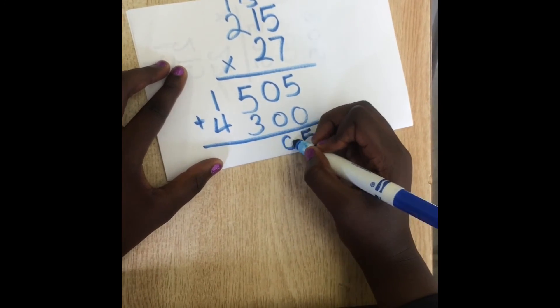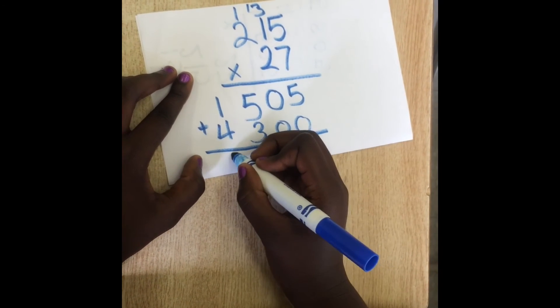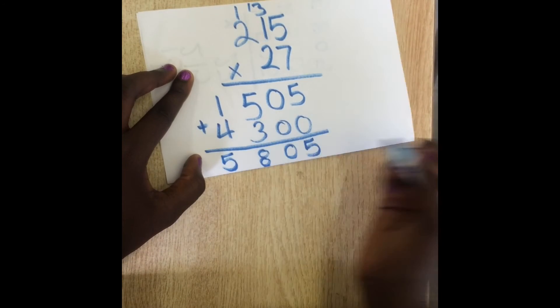Now to the addition. Then you do 5 plus 0 which gives you 5. Then 0 plus 0 which gives you 0. Then 5 plus 3 which gives you 8.